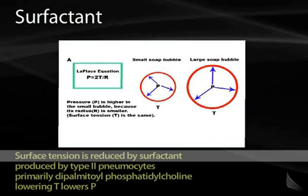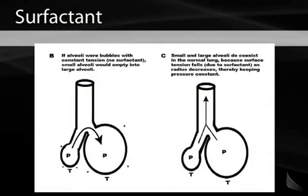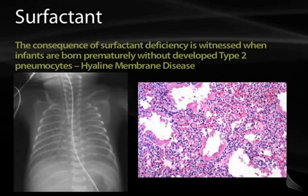Surfactant lowers surface tension in such a way that alveoli of different sizes can coexist. Without surfactant, the pressure in smaller alveoli would be greater than in larger alveoli, and air would rush from small alveoli into large alveoli. We need air to reach all alveoli to normalize air distribution for healthy gas exchange. Surfactant accomplishes this, and we know this is pathological when we examine diseases such as hyaline membrane disease.